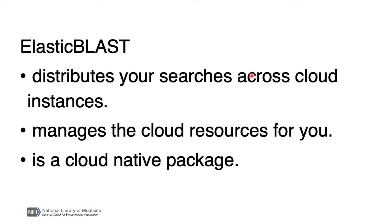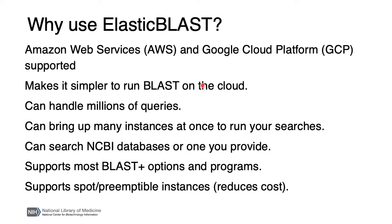Elastic BLAST starts cloud instances or machines and populates them with a database and software, and queues searches to them. The search is run there and not on your local machine. It manages the resources so the instances are shut down when your searches are done. Your results are saved in cloud buckets, which is just an area on the cloud you can store files in. For Elastic BLAST, we've used services like Kubernetes or AWS Batch that are maintained by the cloud provider. There are a lot of reasons to use Elastic BLAST, but I want to emphasize that Elastic BLAST makes it relatively simple to run your BLAST searches on the cloud and do it efficiently.